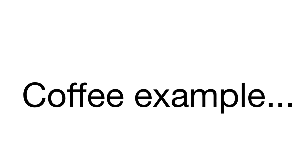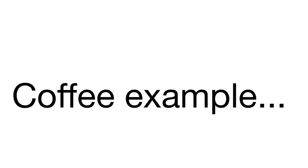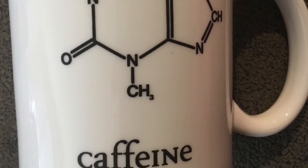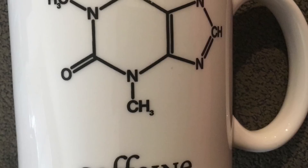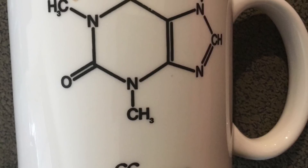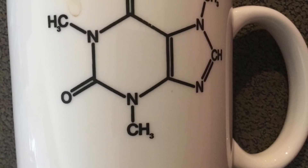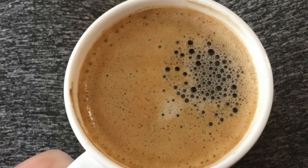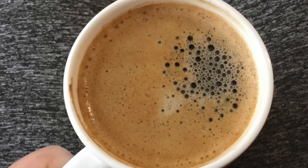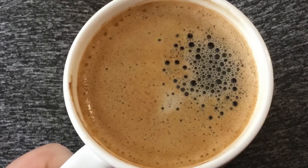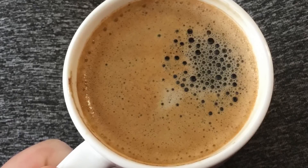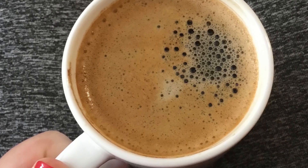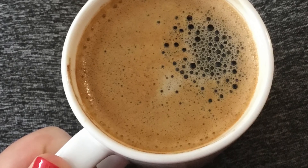Coffee is an example of a mixture. Caffeine is a compound found in coffee, but there are lots of other chemicals present too, like acids, esters, sulfites, minerals, carbohydrates, and lots of water — all present in differing amounts. That's why coffee is a mixture: all of these chemicals aren't there in a fixed ratio.